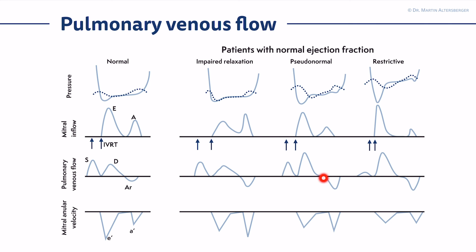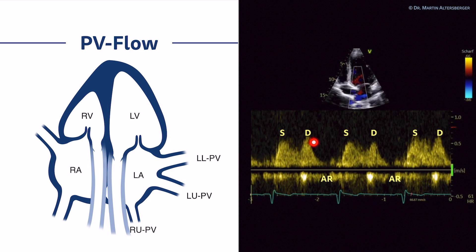The AR wave — atrial reversal — is a good sign. In a young healthy athlete you do not want to see a prominent AR-wave, just a small reversal of flow. In young, healthy, fit individuals, the S-wave can be a little smaller than the D-wave. Furthermore, we have the mitral annular velocities — the E-prime measurements, and the corresponding A-prime. We look at the E-prime mostly. The lower the E-prime, and the higher the E-to-E-prime ratio in restrictive filling pattern, the more it shows elevation of filling pressures.